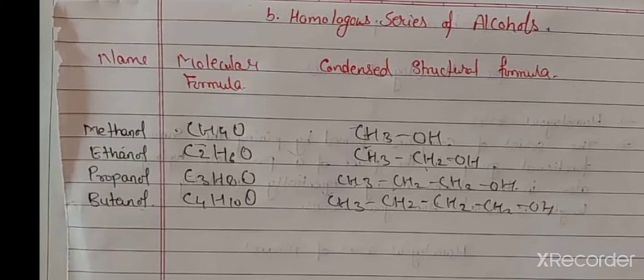Propanol is three carbon: CH3-CH2-CH2OH. Butanol is C4H10O: CH3-CH2-CH2-CH2OH. You are adding the CH2 molecule into the first molecule, causing elongation of the compound, elongation of the molecule.